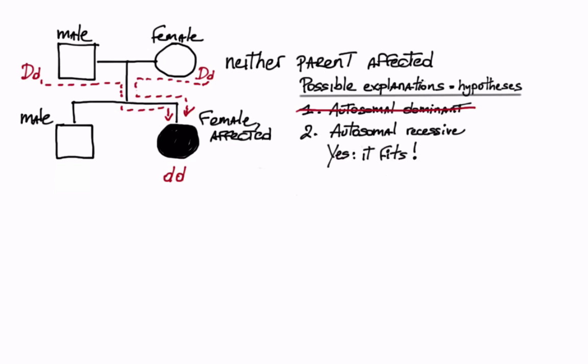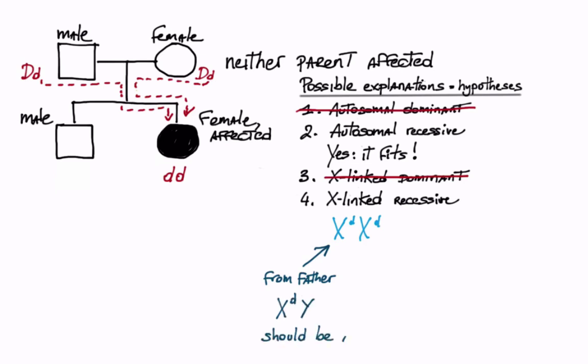Next let's consider X-linked dominant. This does not fit because neither parent is affected. How about X-linked recessive? The affected daughter would be X little d homozygous and should have inherited the condition from the father. If the father had X little d, he would be affected. Therefore we can rule this out. The last hypothesis is Y-linked inheritance. Males should be affected, thus we rule it out.